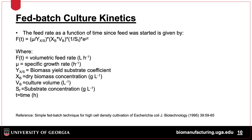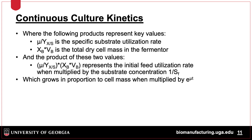In order to run a fed batch fermentation, the feed rate needs to be calculated according to the formula shown, where F sub T is the volumetric feed rate, mu is the specific growth rate, Y sub XS is the biomass yield substrate coefficient, X sub B is the dry biomass concentration, V sub B is the culture volume, S sub F is the substrate concentration, and T is time. The feed rate is equal to mu divided by the yield, which is the specific substrate utilization rate.